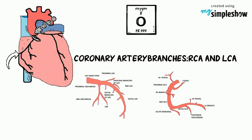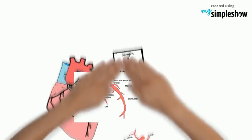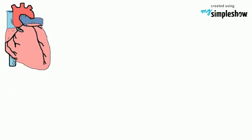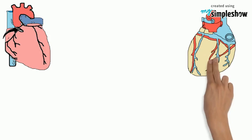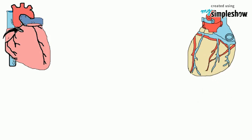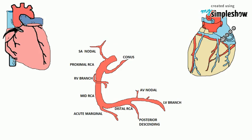In this video we are going to study the right coronary artery. The right coronary artery usually arises from the right coronary sinus. It travels down the right coronary sulcus towards the crux of the heart. It supplies the right side of the heart and the interventricular septum.